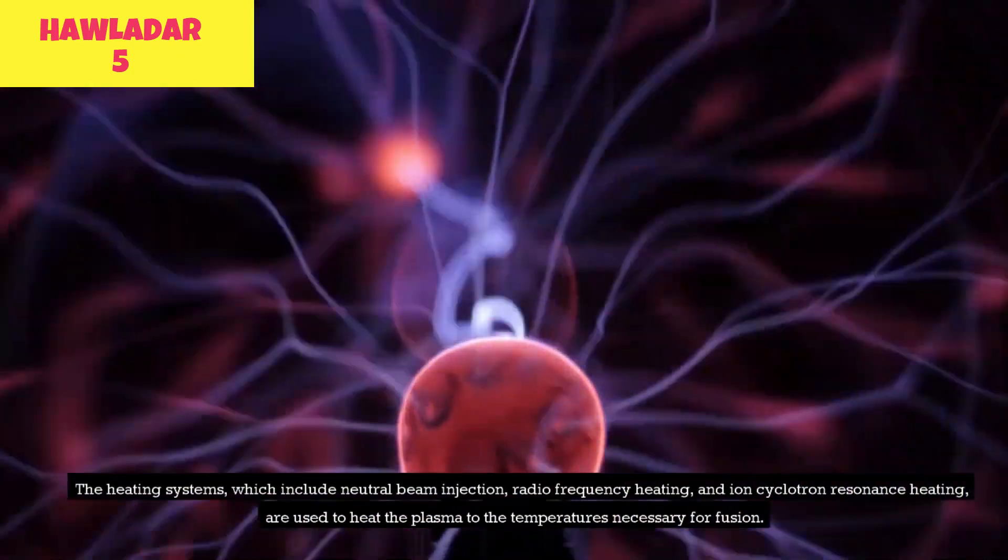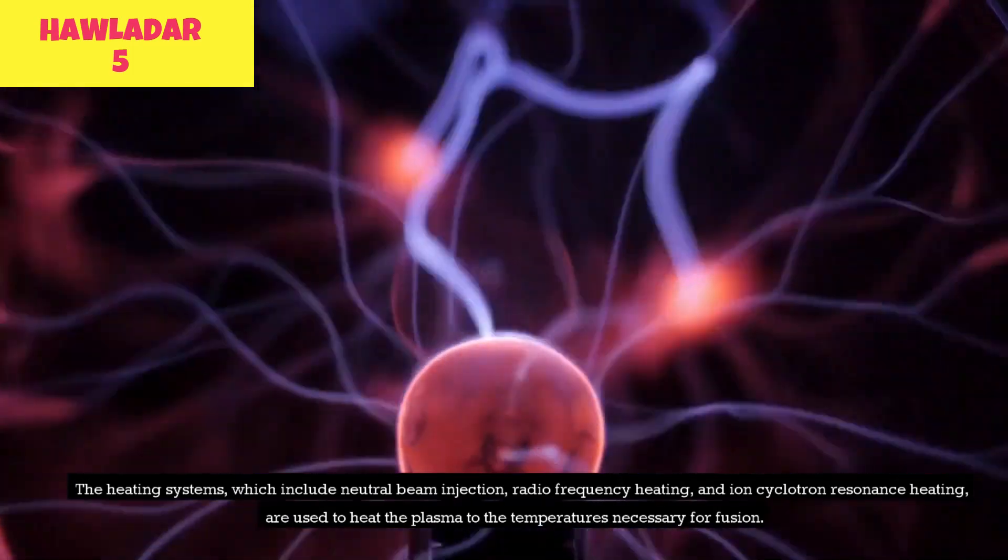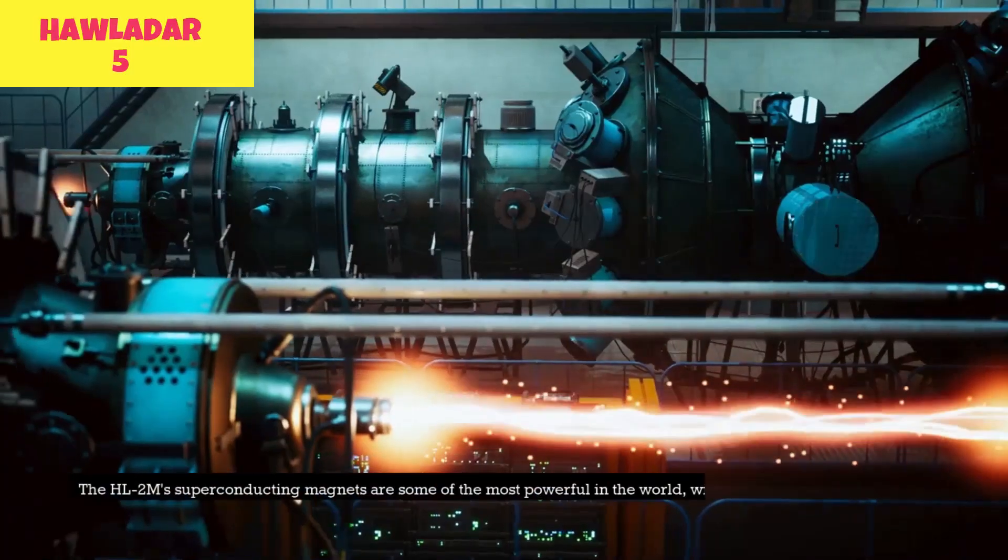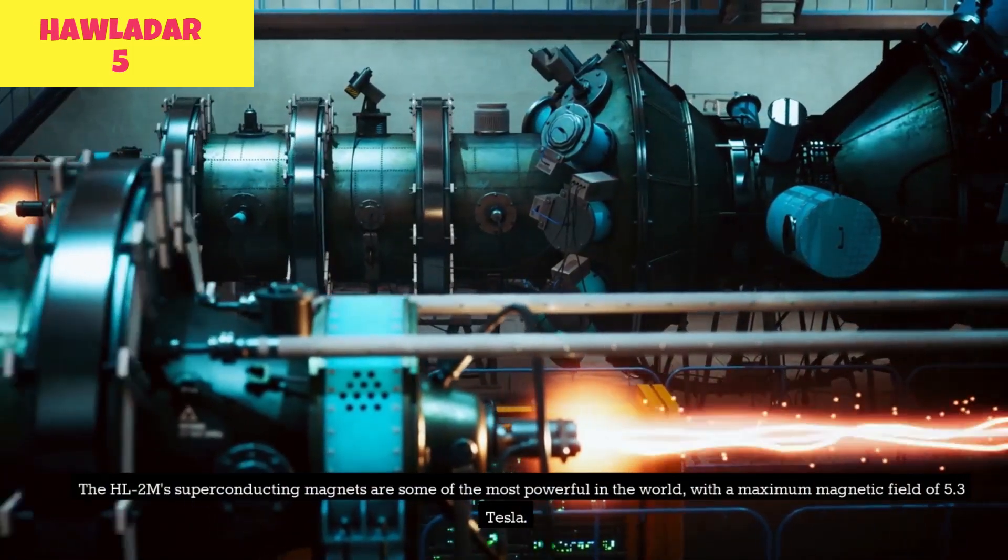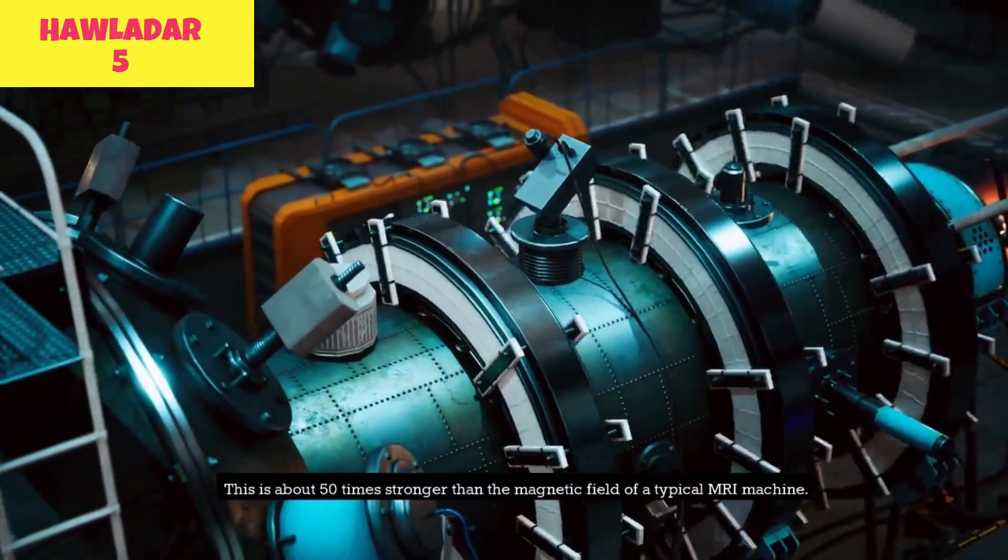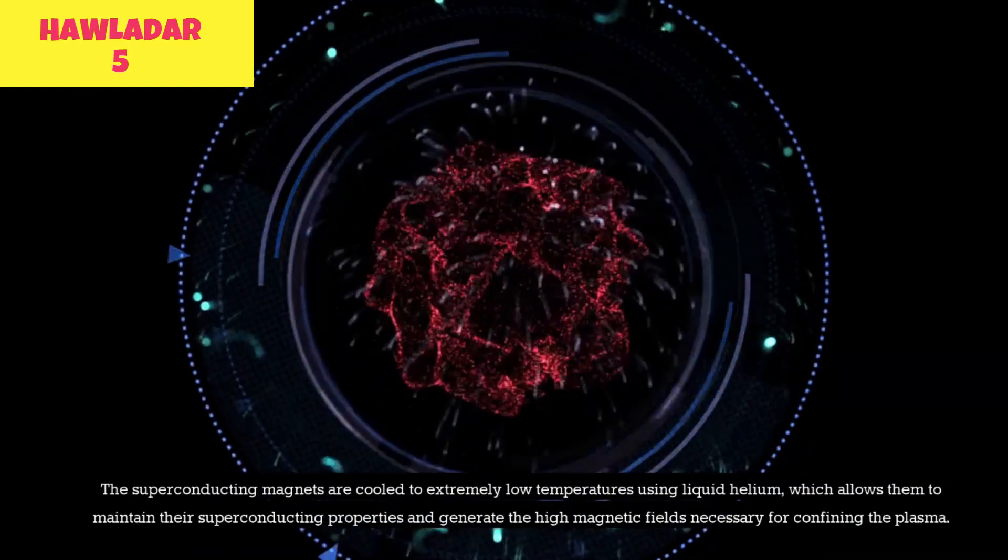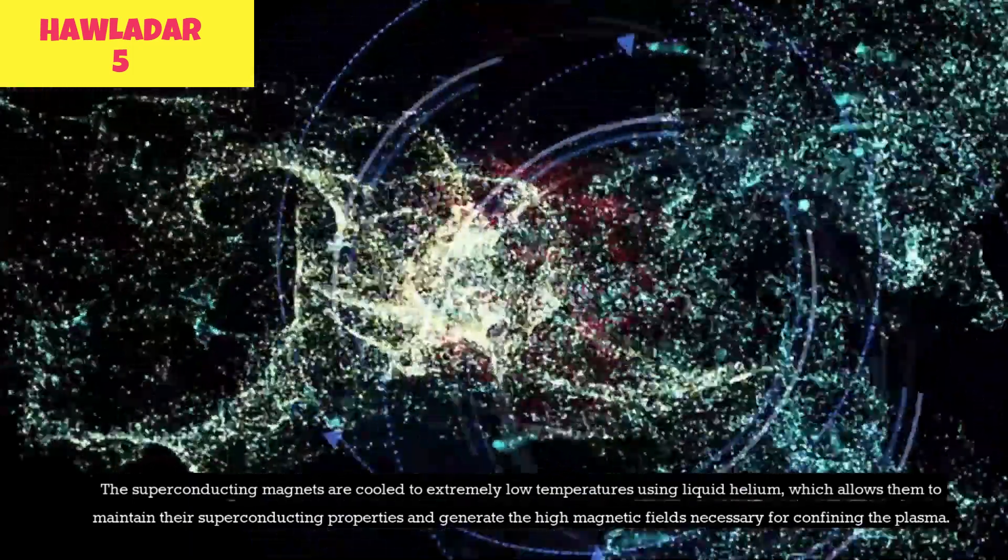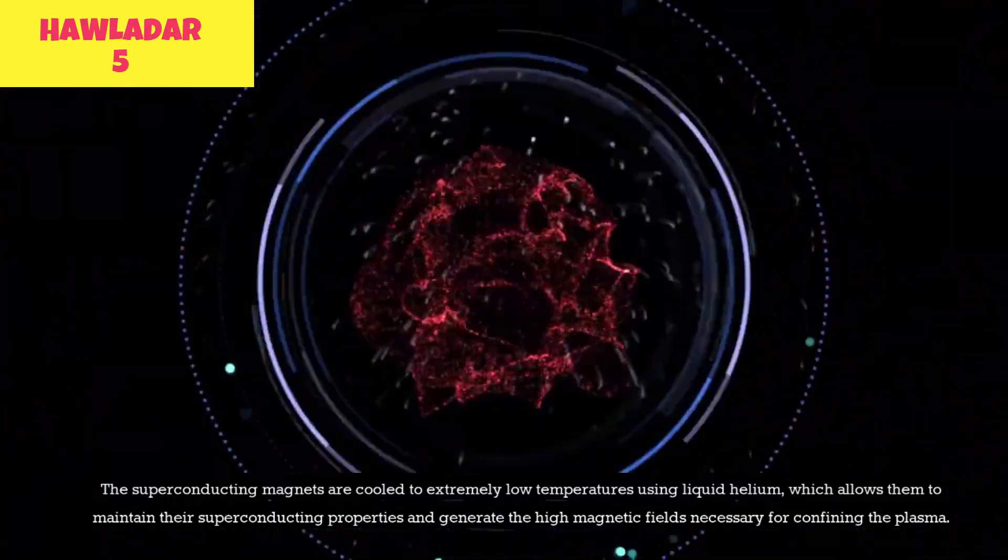The heating systems, which include neutral beam injection, radio frequency heating, and ion cyclotron resonance heating, are used to heat the plasma to the temperatures necessary for fusion. The HL2M's superconducting magnets are some of the most powerful in the world, with a maximum magnetic field of 5.3 Tesla. This is about 50 times stronger than the magnetic field of a typical MRI machine. The superconducting magnets are cooled to extremely low temperatures using liquid helium, which allows them to maintain their superconducting properties and generate the high magnetic fields necessary for confining the plasma.